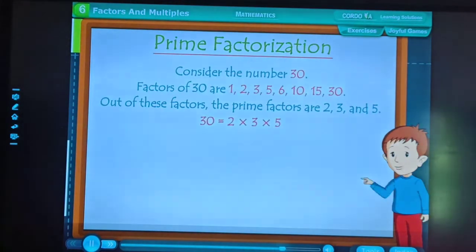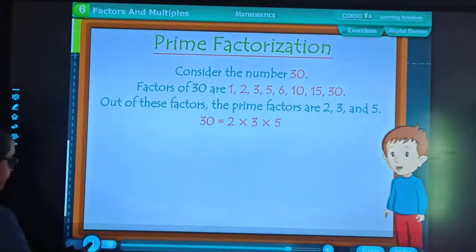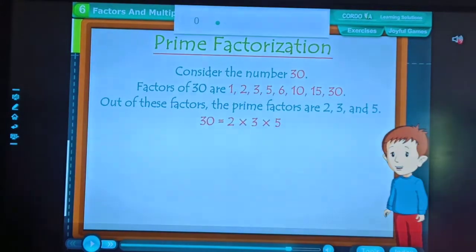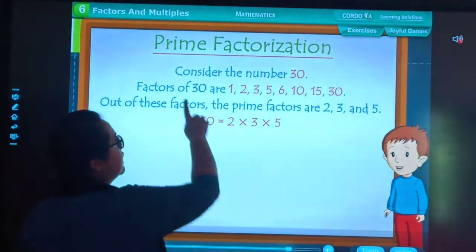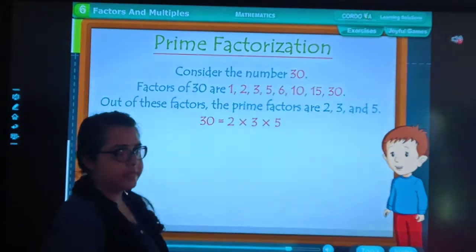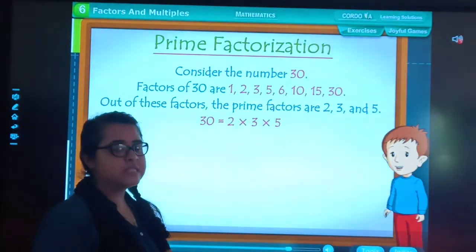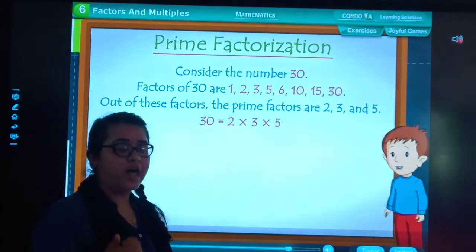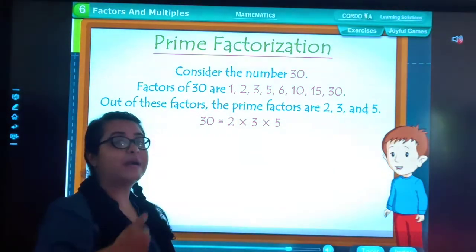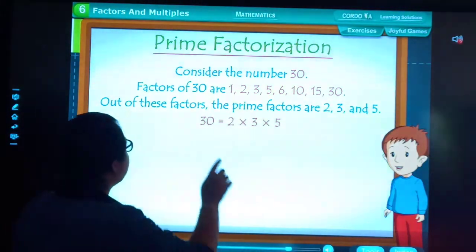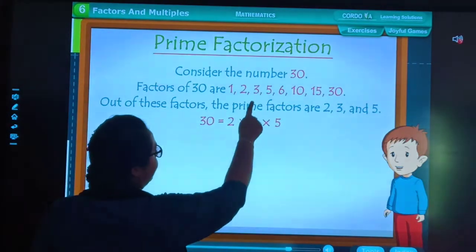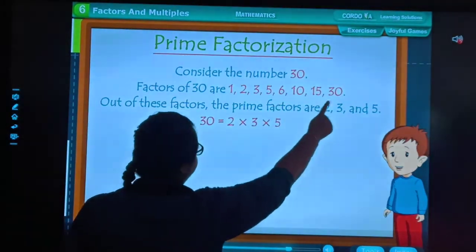Consider the number 30. Factors of 30 are 1, 2, 3, 5, 6, 10, 15, 30.